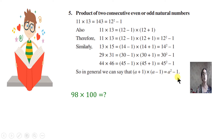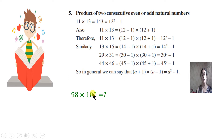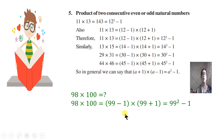The number between 98 and 100 is 99. So 98 into 100 can be expressed as 99 minus 1 into 99 plus 1, which equals 99 squared minus 1. I hope you thought of it in this manner and have understood this pattern.